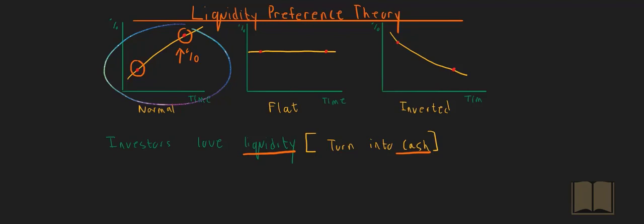So that's the liquidity preference theory. Investors prefer short-term instruments because they love having access to cash. And if they are to take long-term instruments, then they want to be compensated for taking on this lack of liquidity by means of a higher interest.